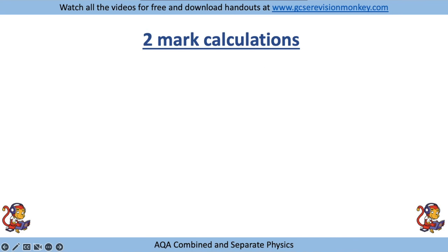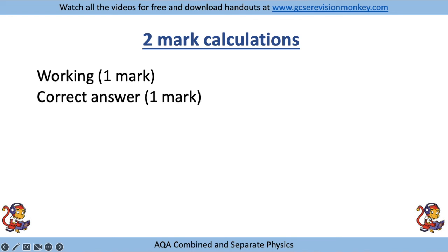Let's have a look at two-mark calculations first of all. You're getting one mark for your working and one mark for your correct answer. We really encourage you to show your working because even if you use your calculator incorrectly and get the wrong answer, you will still get a mark for the correct working out.